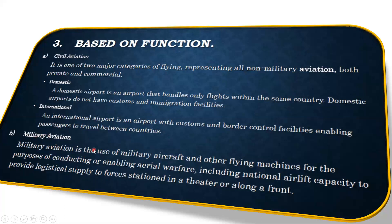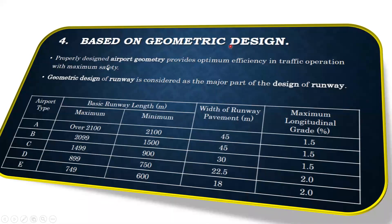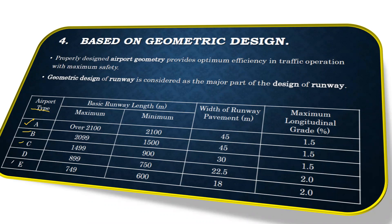The next classification is based on geometric design. A properly designed airport geometry provides optimal efficiency in traffic operation with maximum safety. The geometric design of a runway is considered a major part of the design. Airports are classified by types A, B, C, D, and E, based on the basic runway length — what is the maximum and minimum runway length.